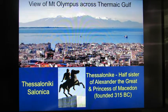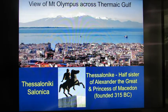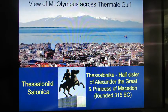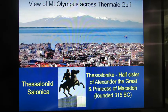Thessaloniki is often called Salonica in English. It was founded in 315 BC as a conglomeration of villages, and it was named after the half-sister of Alexander the Great, who was also the princess of Macedon.